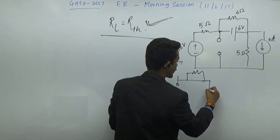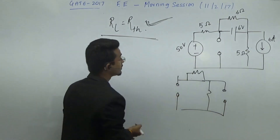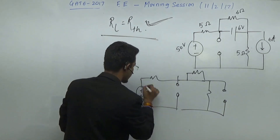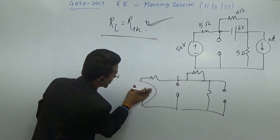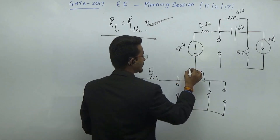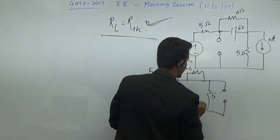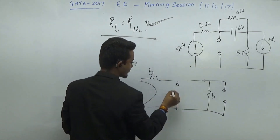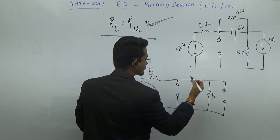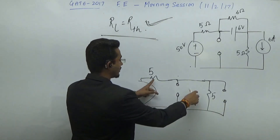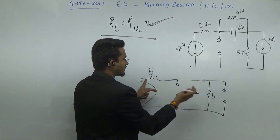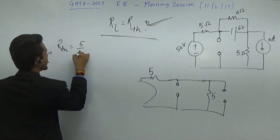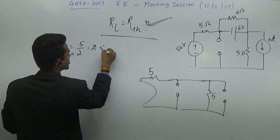Here you will get the open circuit. This is 5, this is 6, this is 5. It is shorted again with the 6, so that 6 does not have any meaning. Five and five will be in parallel, meaning if you see from here, both are in parallel. So RTH will be five by two, that is 2.5 ohm.